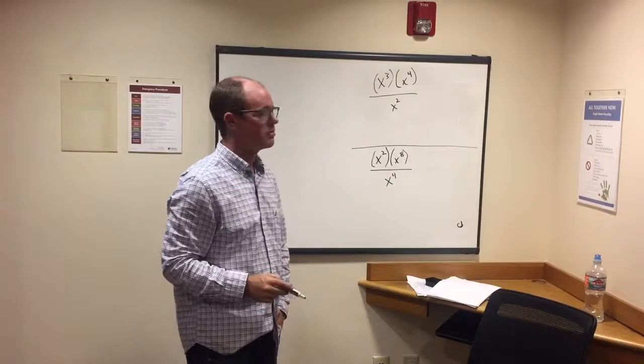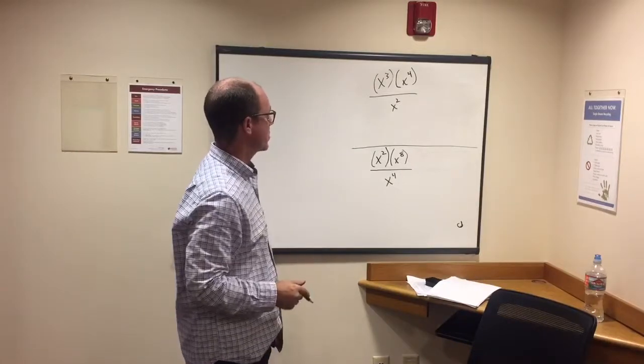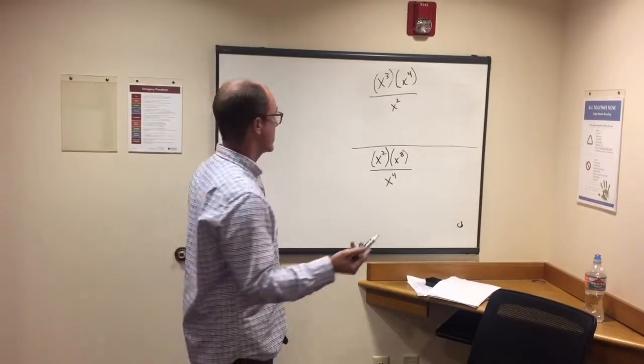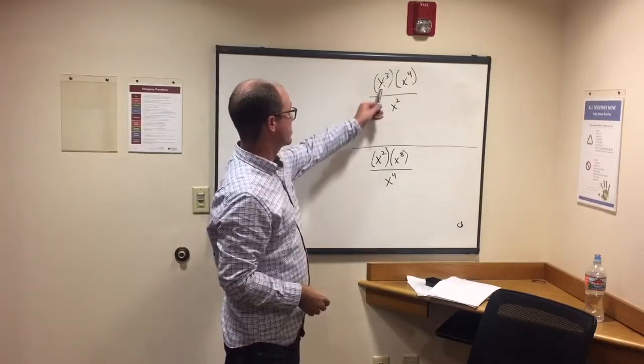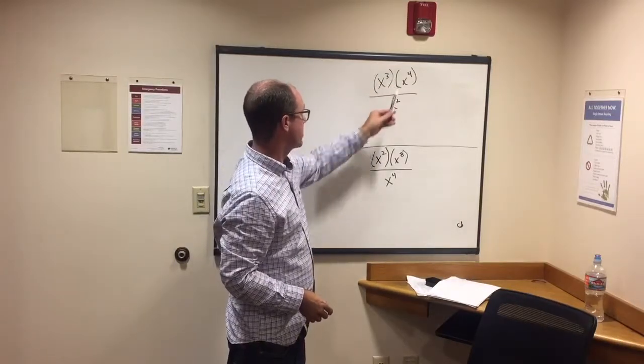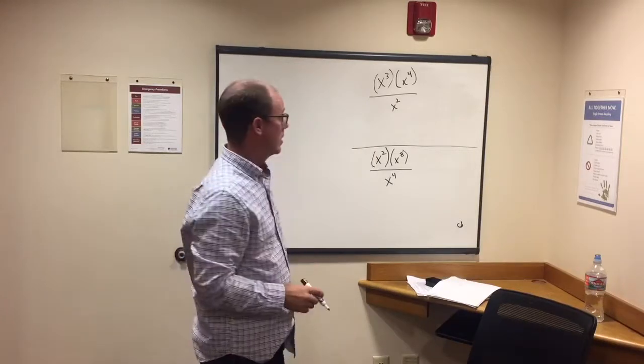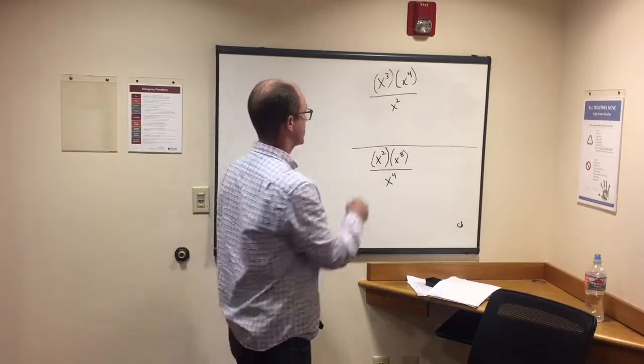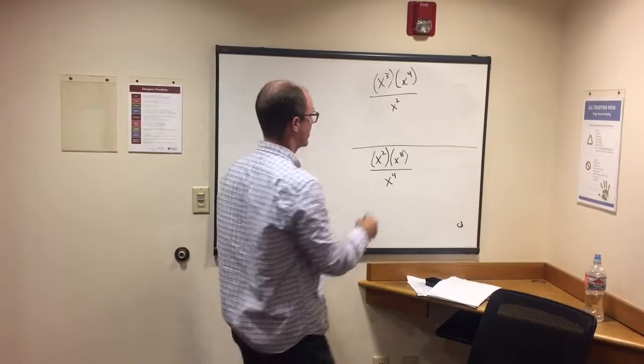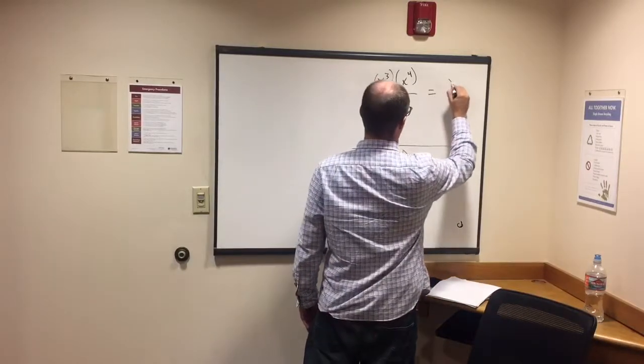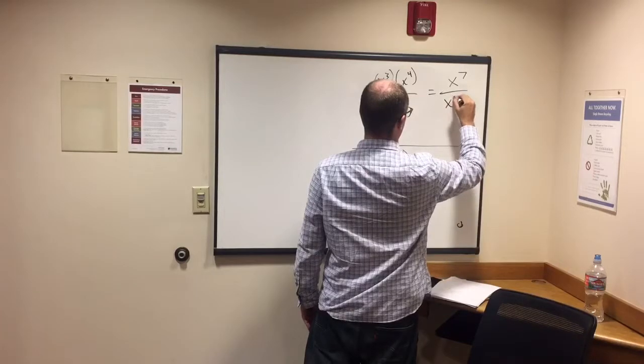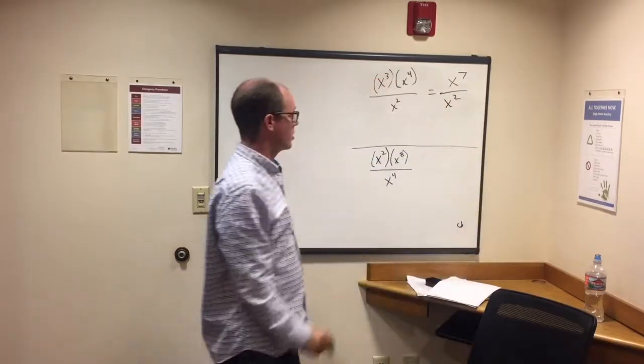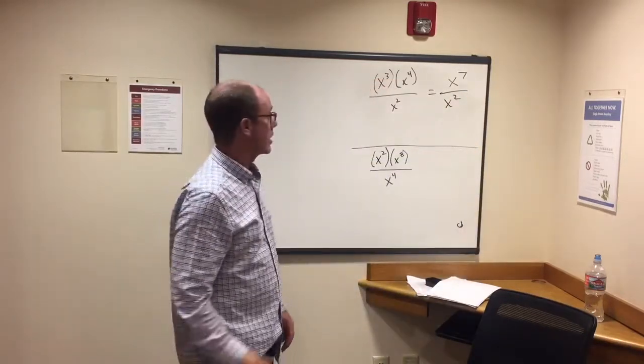We have x to the third times x to the fourth divided by x squared. So the key that we need to know here is that when we're multiplying something with the same base, so x and x, it's the exact same thing, that's the same base, then we add the exponents. Three plus four is seven, so we would have x to the seventh all over x squared.